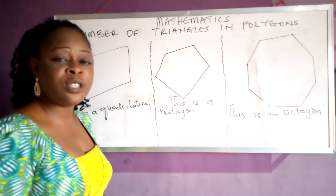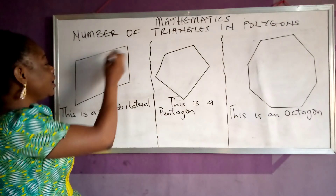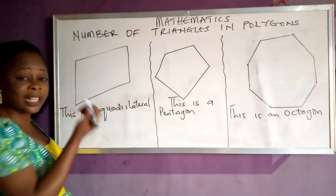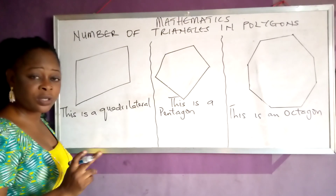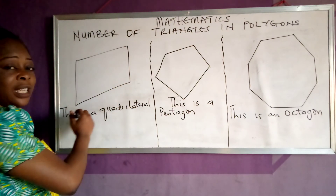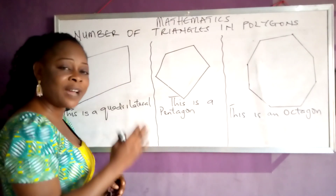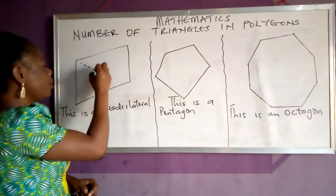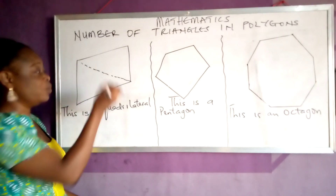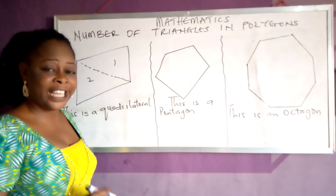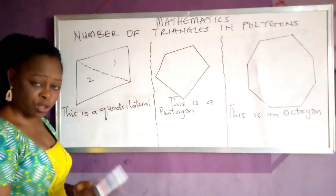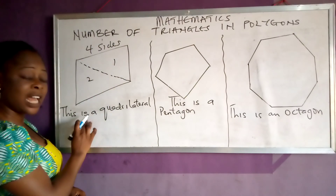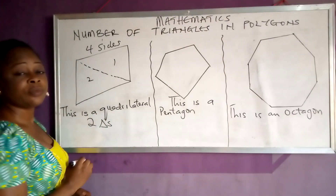To divide this quadrilateral into triangles, I can start from one vertex and draw a line across. I will get a triangle. I can bring another line like this and get another triangle. But note — if lines overlap each other, you are not getting the right result. So I will draw from one vertex to another non-adjacent vertex. How many triangles do you have now? Two — one, two. So a four-sided shape gives two triangles. Don't forget that the sum of angles in a triangle is 180 degrees.